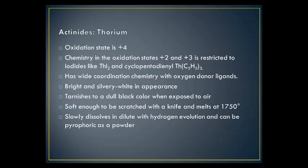Thorium exhibits the plus-4 oxidation state exclusively. The chemistry in the plus-2 and plus-3 oxidation states is restricted to iodides like ThI₂ and cyclopentadienyl Th(C₅H₅)₃. It has wide coordination chemistry with oxygen donor ligands. Thorium metal is bright and silvery-white and tarnishes to a dull black color when exposed to air. It is soft enough to be scratched with a knife, melts at 1750°C, slowly dissolves in dilute acids with hydrogen evolution, and can be pyrophoric as a powder.